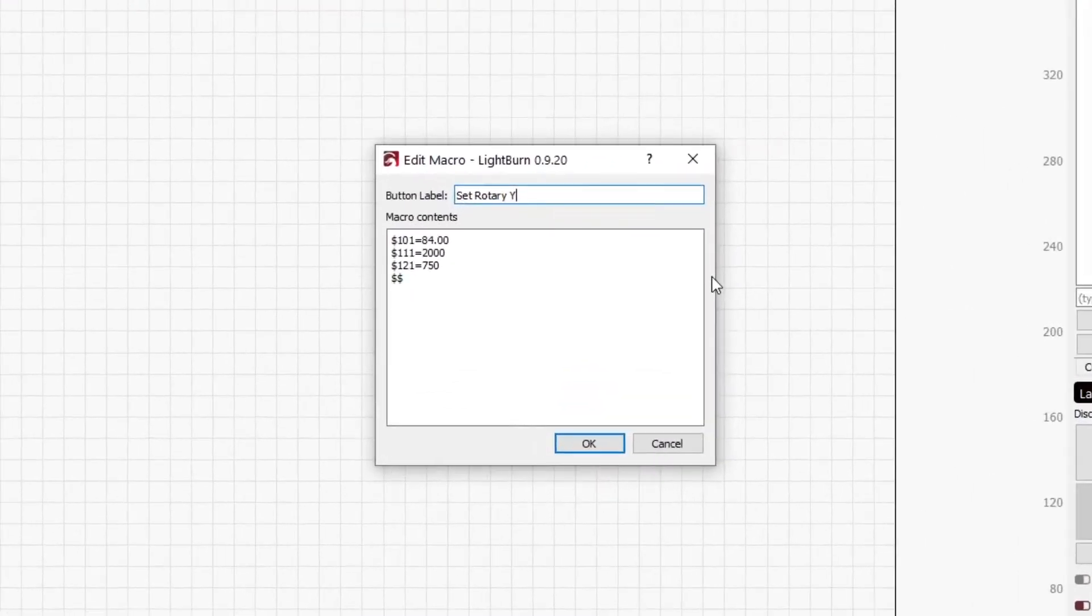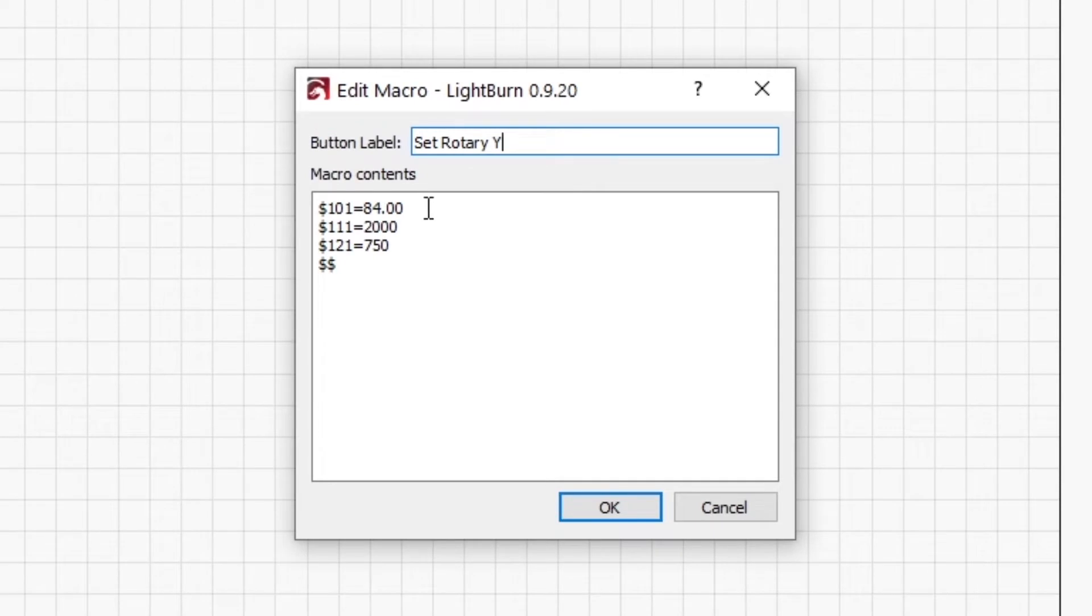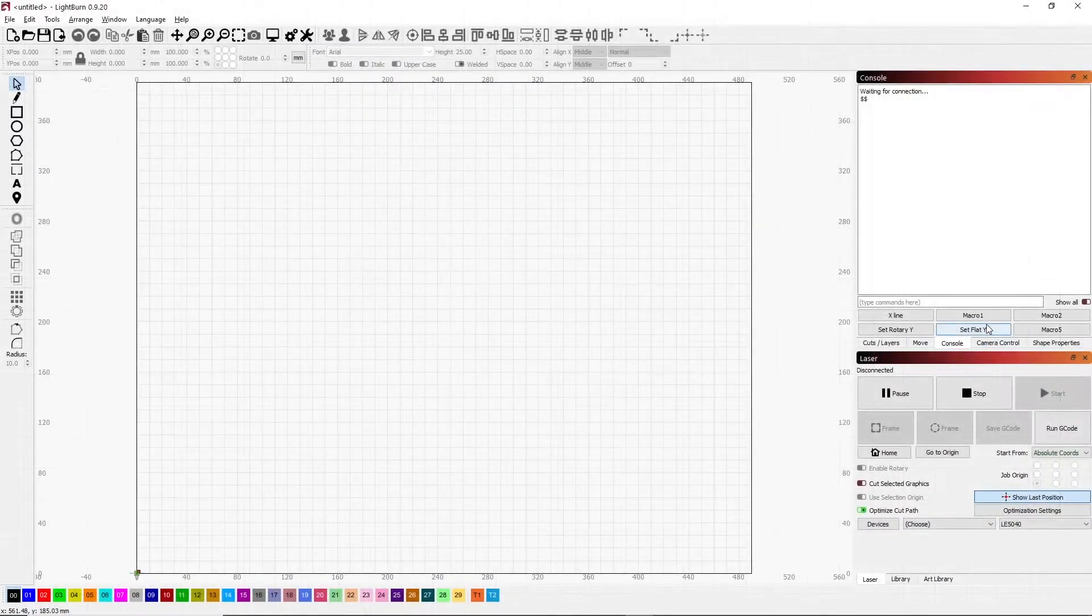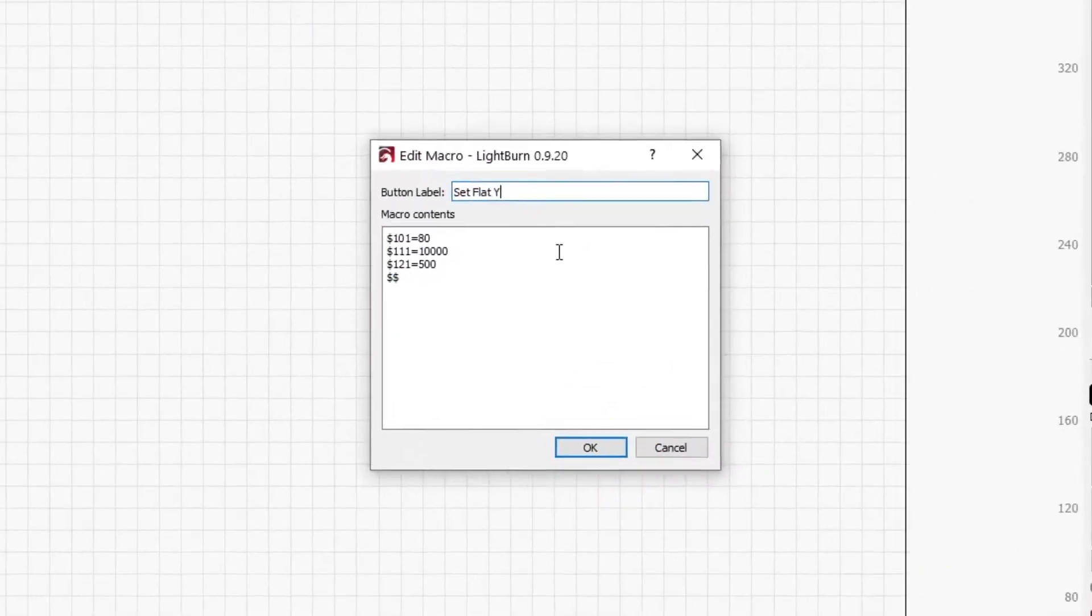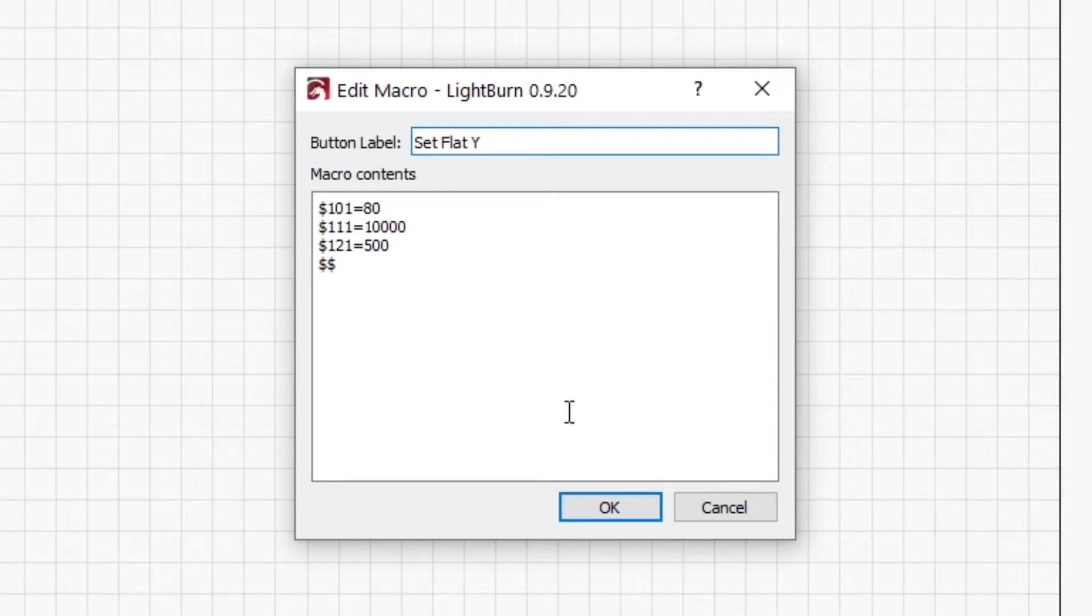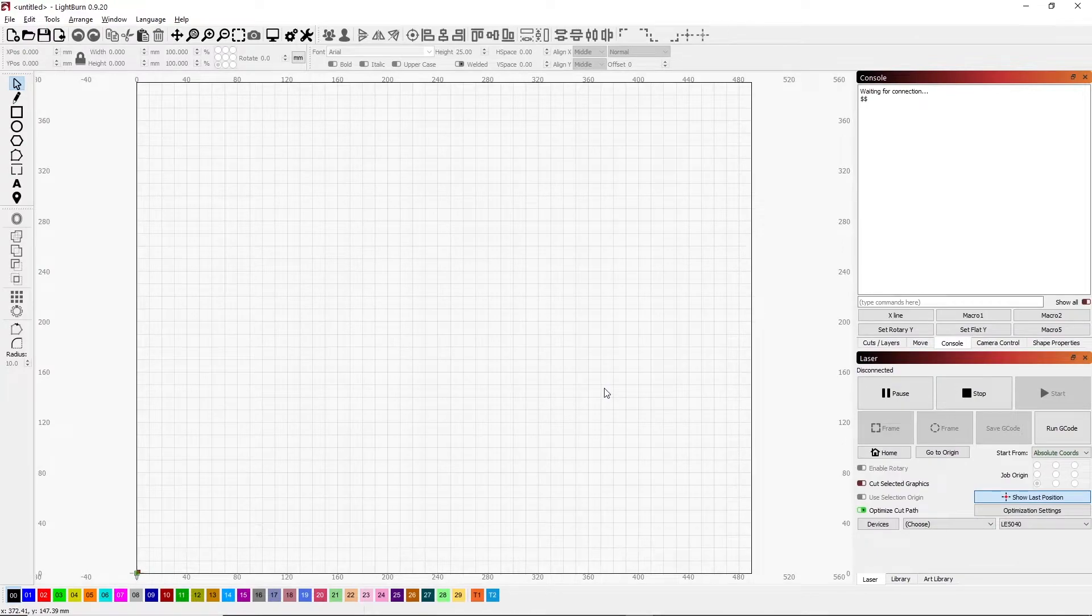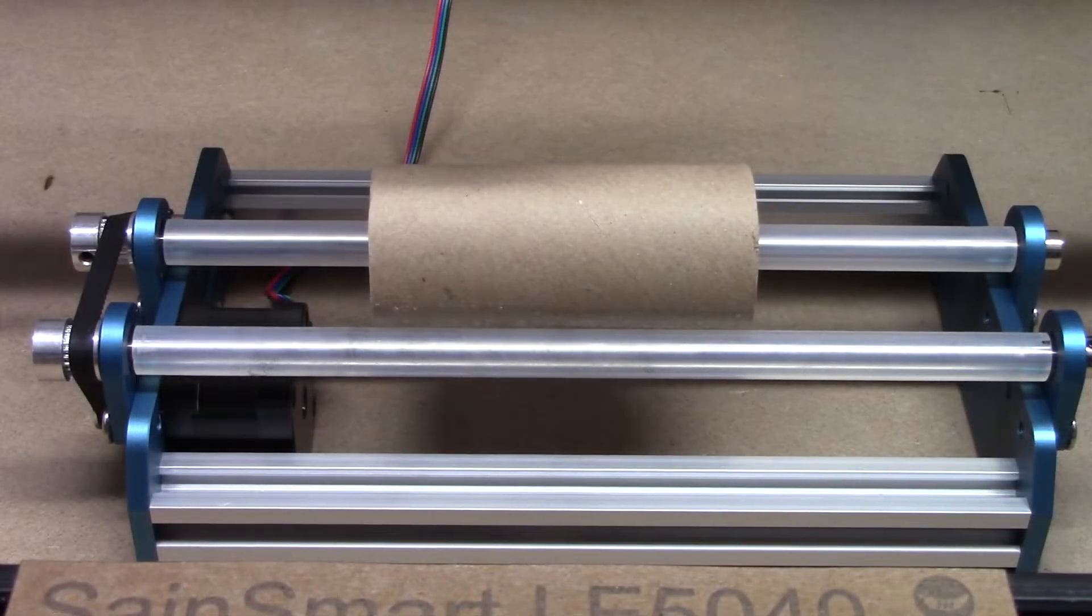Because the controller needs to be configured, I set up two macros. One that sets the 101 to 84, the 111 to 2000, and the 121 to 750. I also have a macro to set them back for when I'm not using the rotary tool. These determine how fast the stepper motor turns, how much it turns, etc. And so this is what the factory suggests.